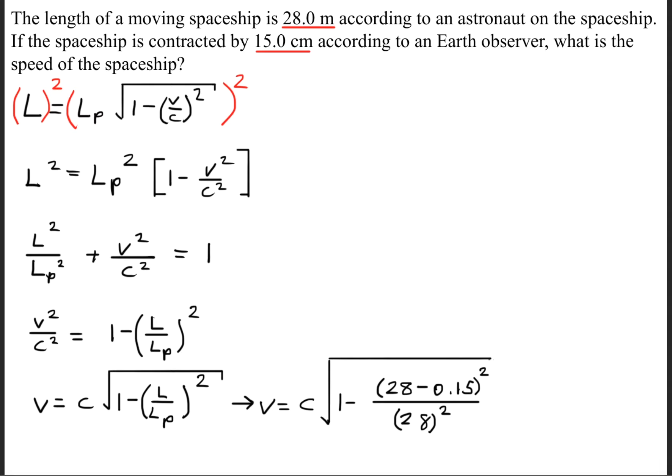Now we'll use the given information. The length of a moving spaceship is 28 meters, which is the proper length.